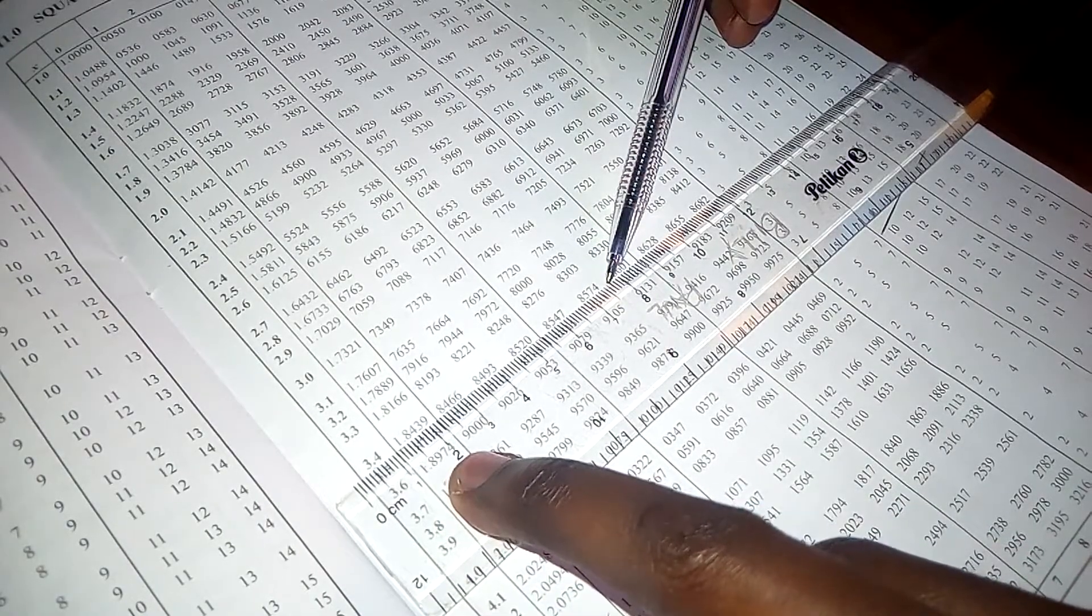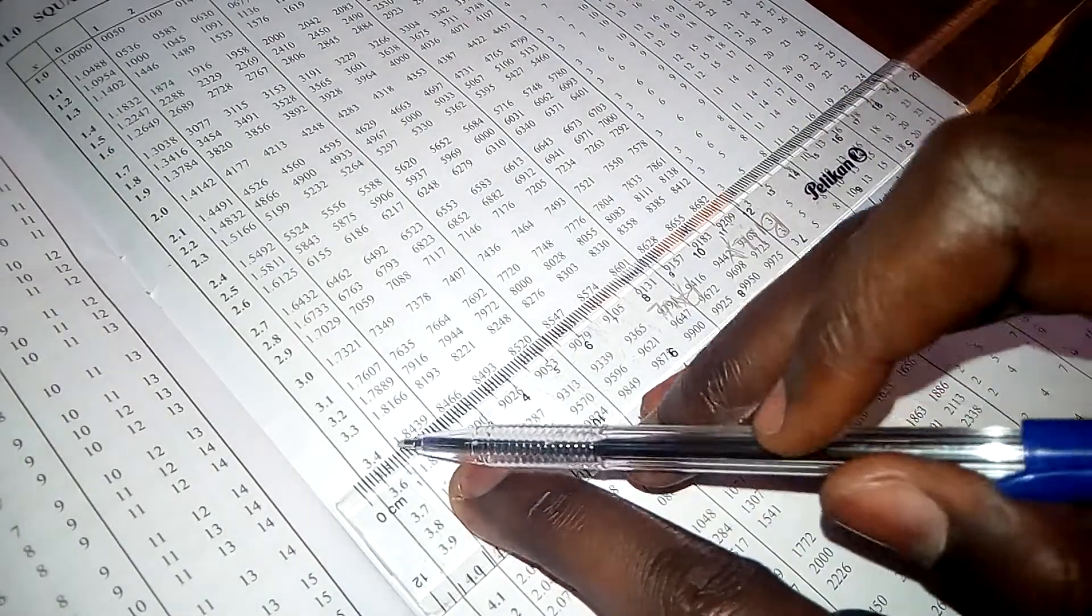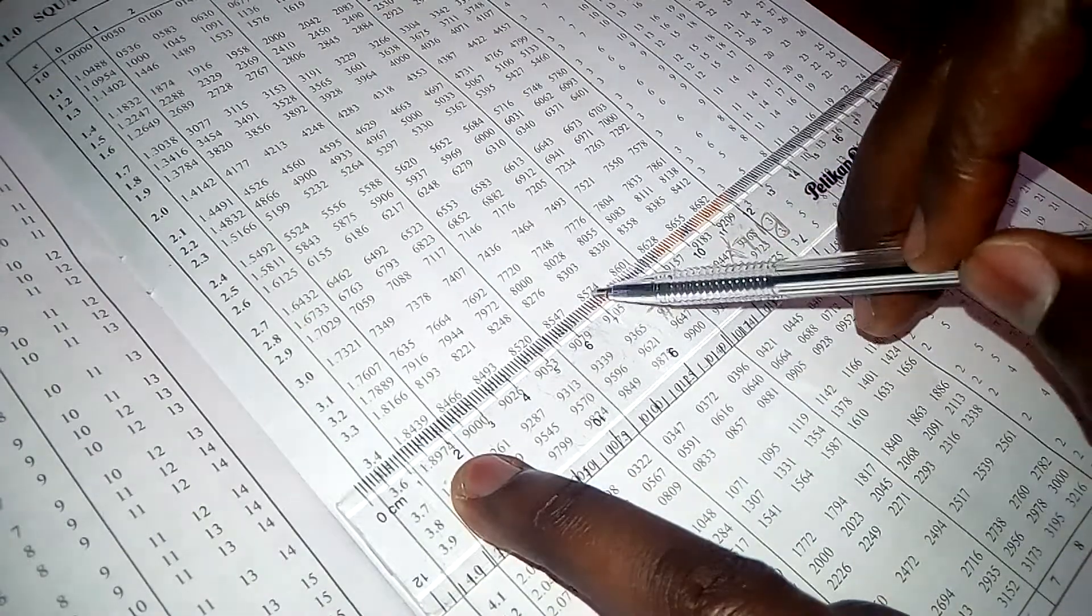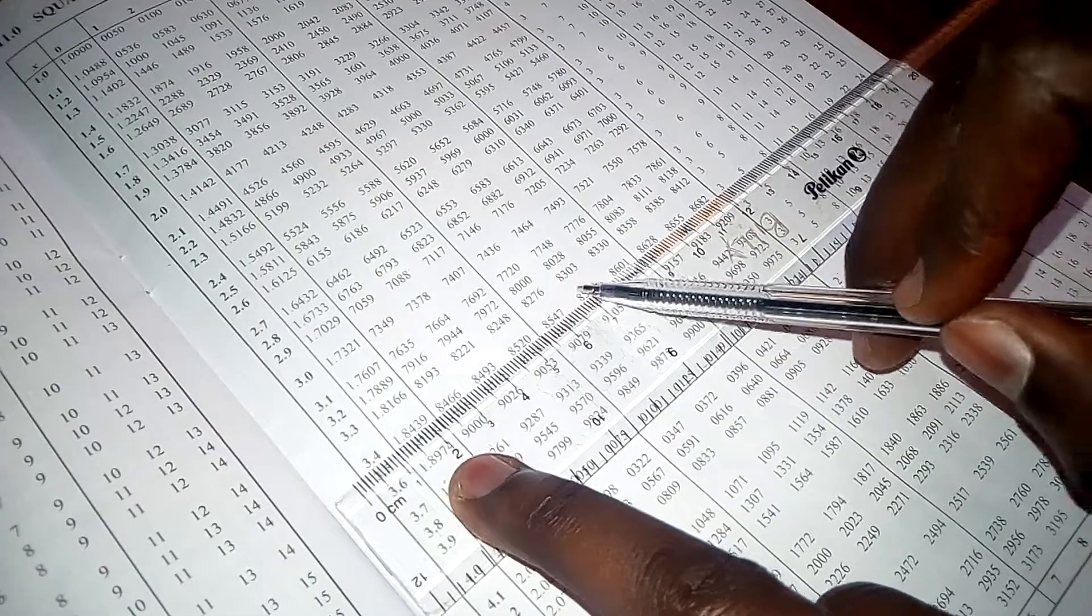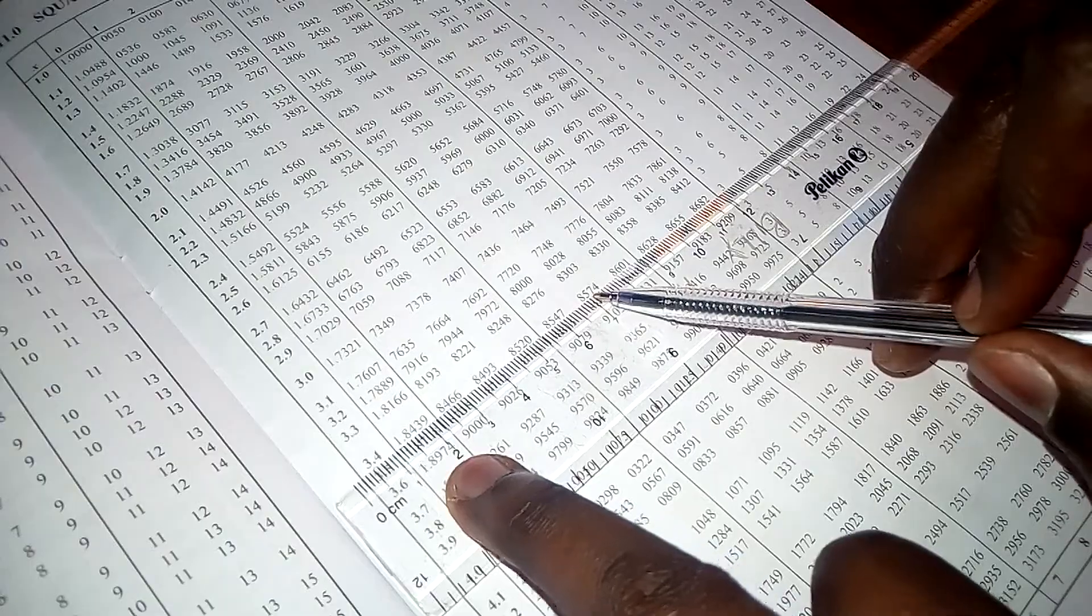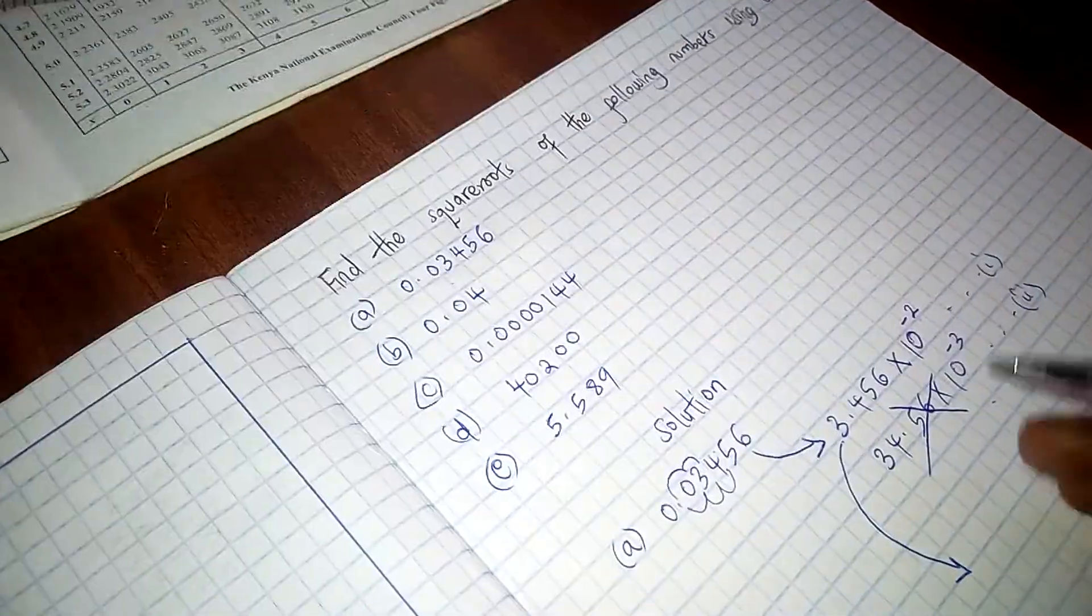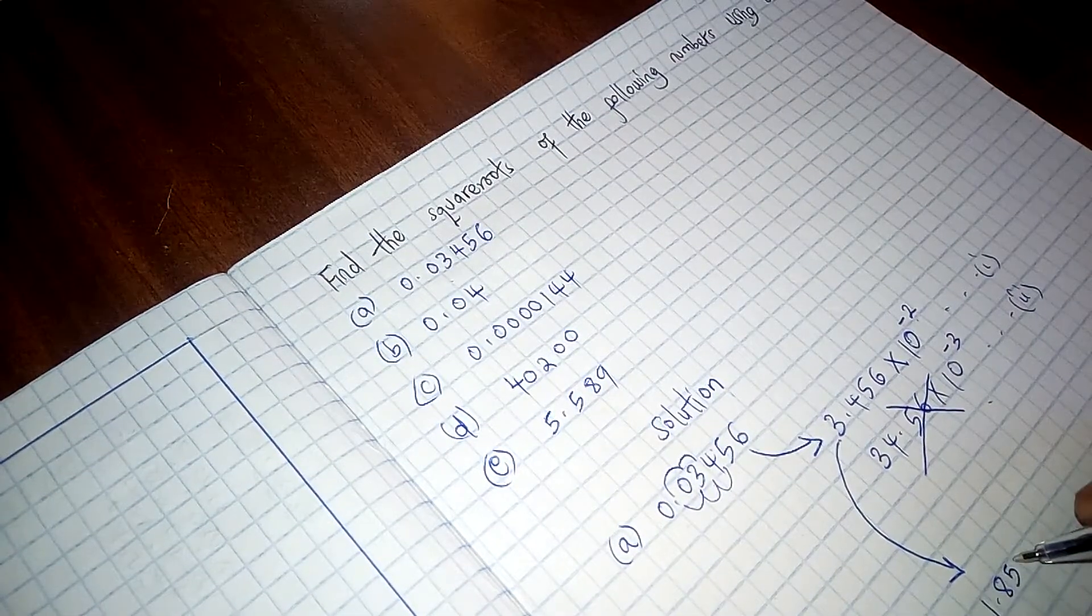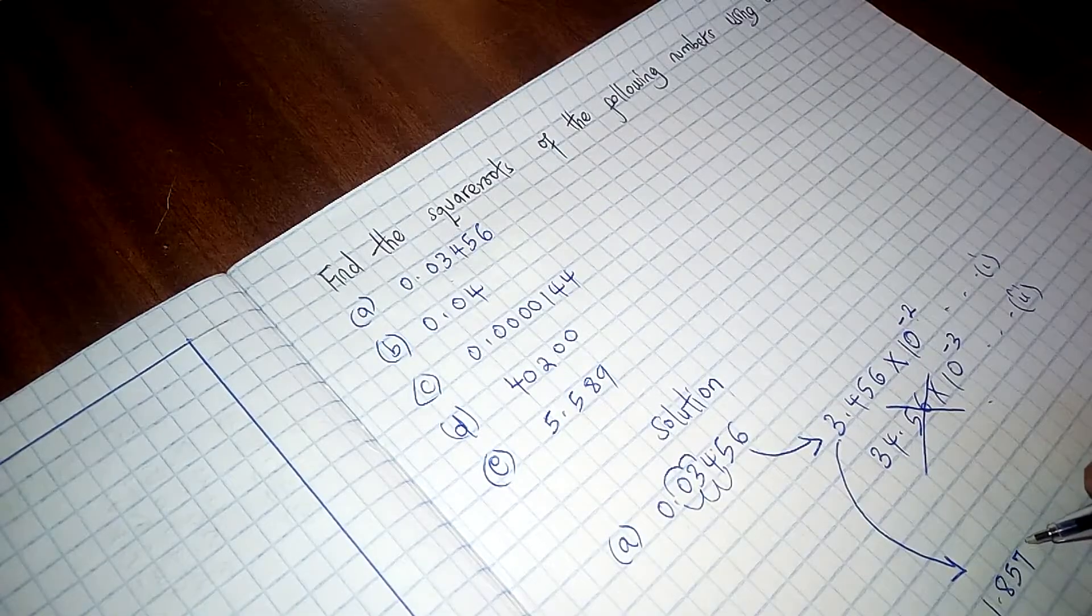But remember that the leading value, remember that the leading value is 1 here. This is the leading value. So these are just the decimal, the numbers that comes after the decimal. So we are going to have 1.8574.